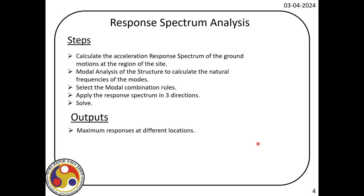In the second step we do the modal analysis of the structure to get the modal mass, because we will be using the modal mass to solve this response spectrum and then combine different modes using different modal combination rules. We discussed the absolute sum, which is often very conservative since all modal responses will not attain their peak at the same time point. Then we discussed SRSS rule and CQC rule as different modal combination options.